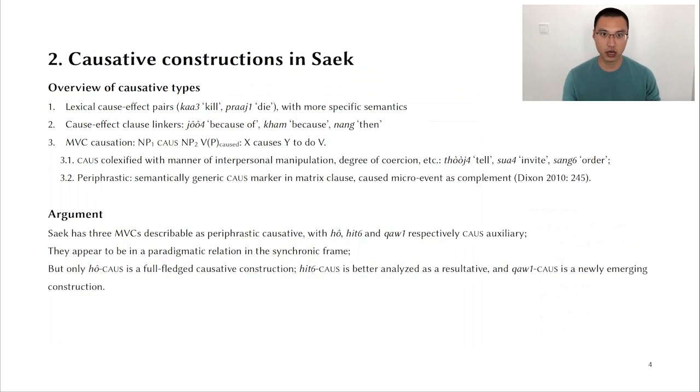So causation in Saek or causative constructions in Saek. Let's first have an overview. There are three main types of cause-effect constructions in Saek. One of them are the lexical cause-effect pairs such as gà kill and prài die. And importantly, the causing verb gà has more specific semantics than simply causing someone or something to die. The second construction is cause-effect clause linking with clause linkers such as yùe because of, kom because, nùng then. Finally, there is this multiverb causative construction of the general template: noun phrase, causative marker, second noun phrase, and then a verb or verb phrase denoting the event that was caused. The general meaning is that X causes Y to do something.